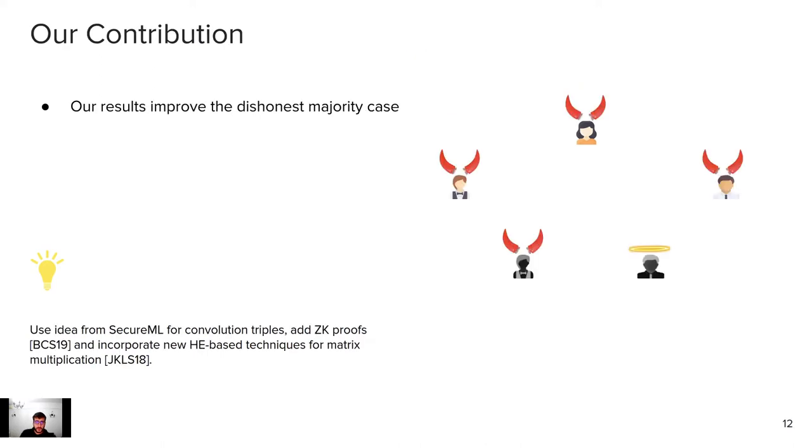So what about dishonest majority? We realized that there's not much research about how to multiply matrix triples with a dishonest majority, meaning that lots of parties can arbitrarily deviate from the protocol. What we do is, in a nutshell, we use the idea from SecureML, but we use it for convolution triples. So instead of generating matrix triples, we generate convolution triples, we add zero-knowledge proofs on top of that, which are the newer variant for homomorphic encryption zero-knowledge proofs by Baum et al. And then we incorporate new homomorphic encryption-based techniques for matrix multiplication from two years ago at CCS.